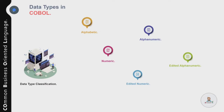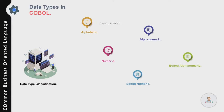Edited numeric is made up of digits and special characters. Edited alphanumeric is made up of letters, digits, and special characters. An important point to remember is that edited numeric and edited alphanumeric are generally used for reporting or displaying data on your screens. For example, employee name 'David Murphy' is classified as alphabetic, employee salary '2000 euros' as alphanumeric, and age or monthly tax like 30 or 10.20 as numeric.